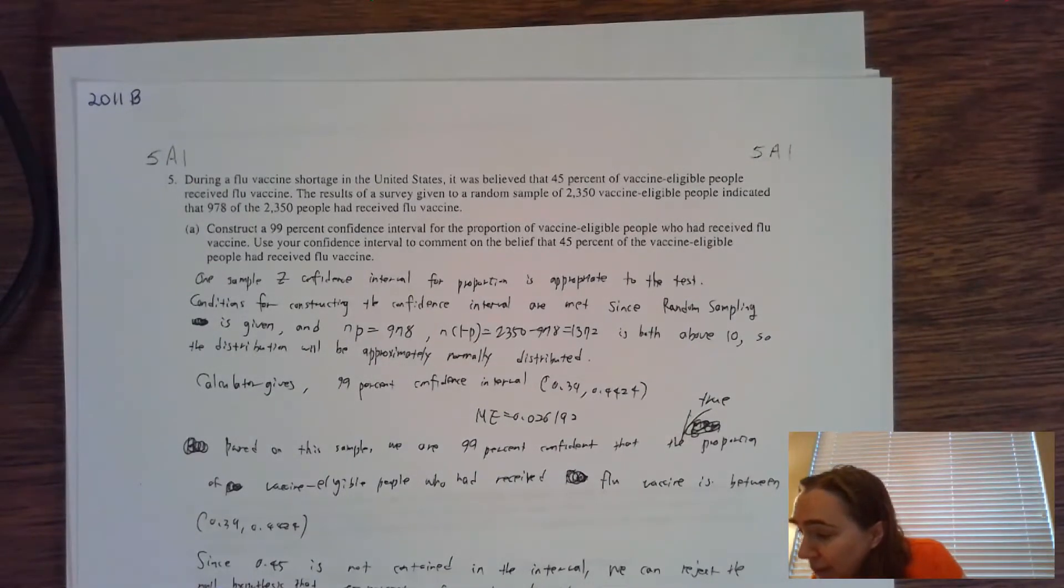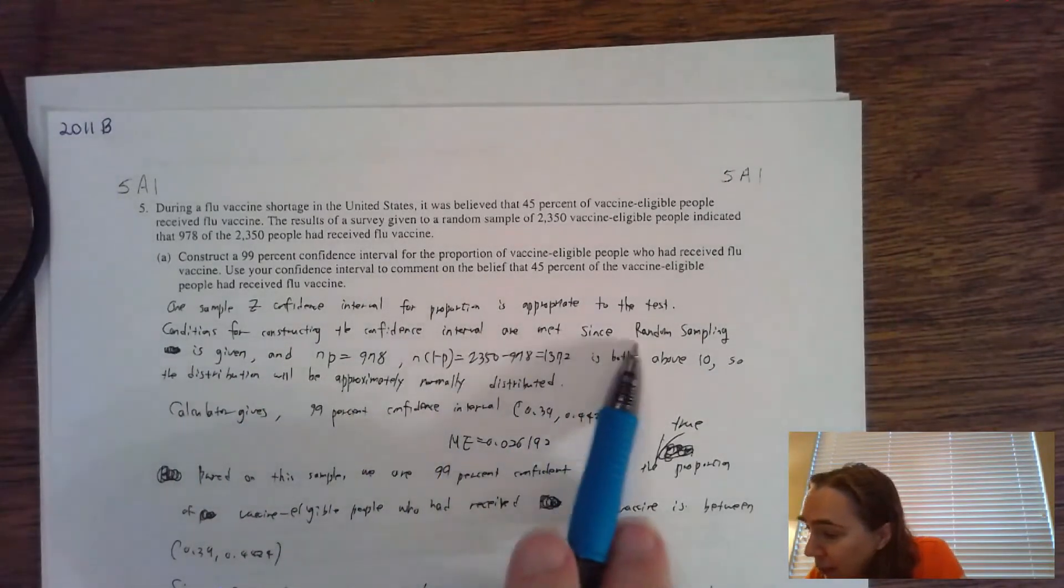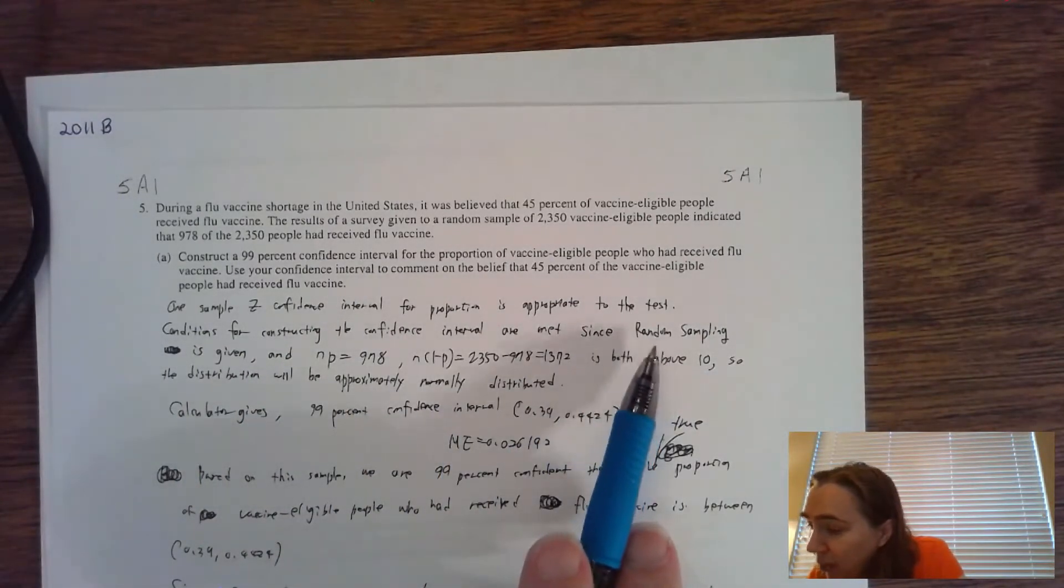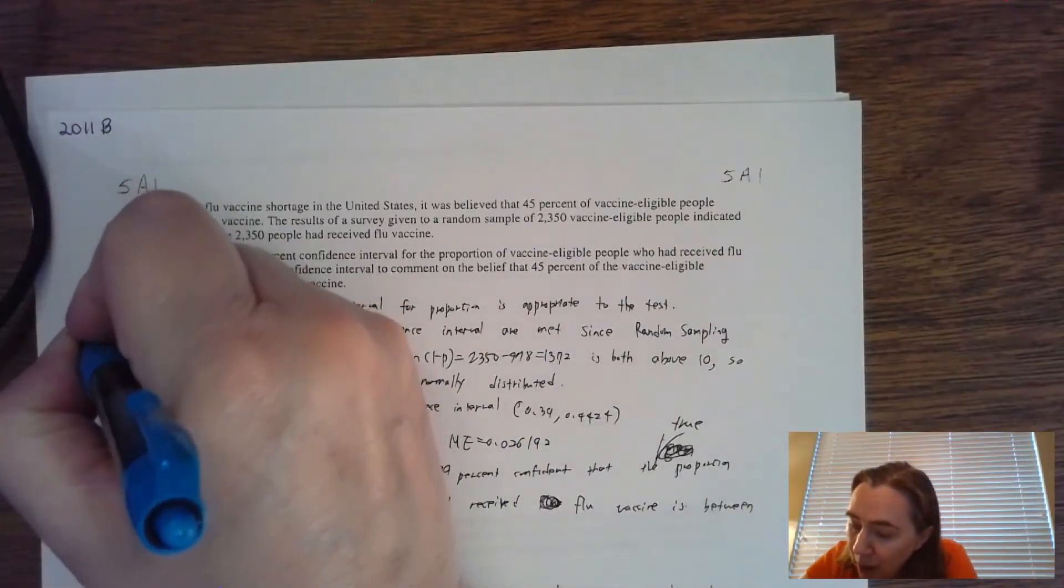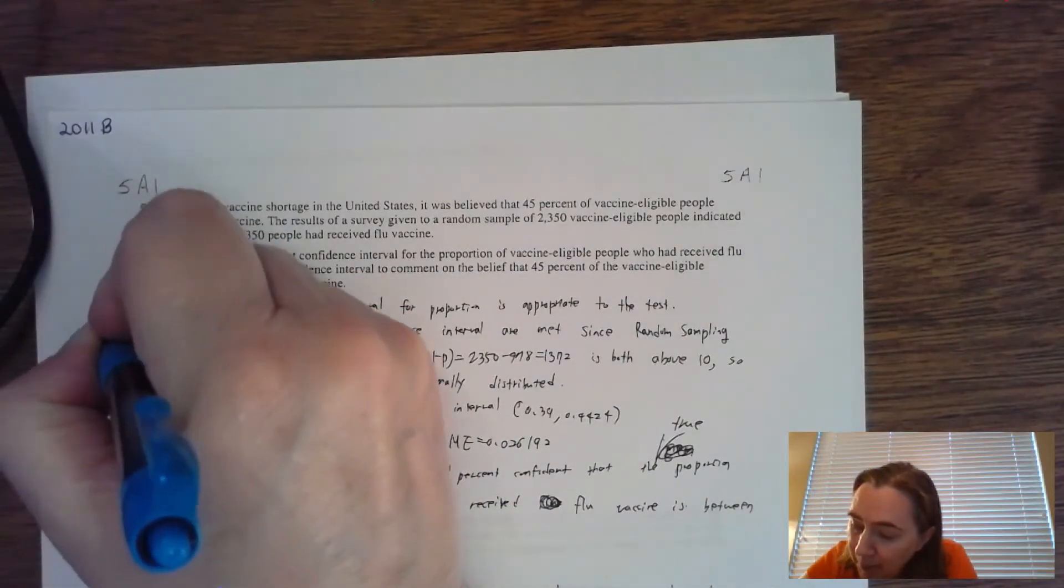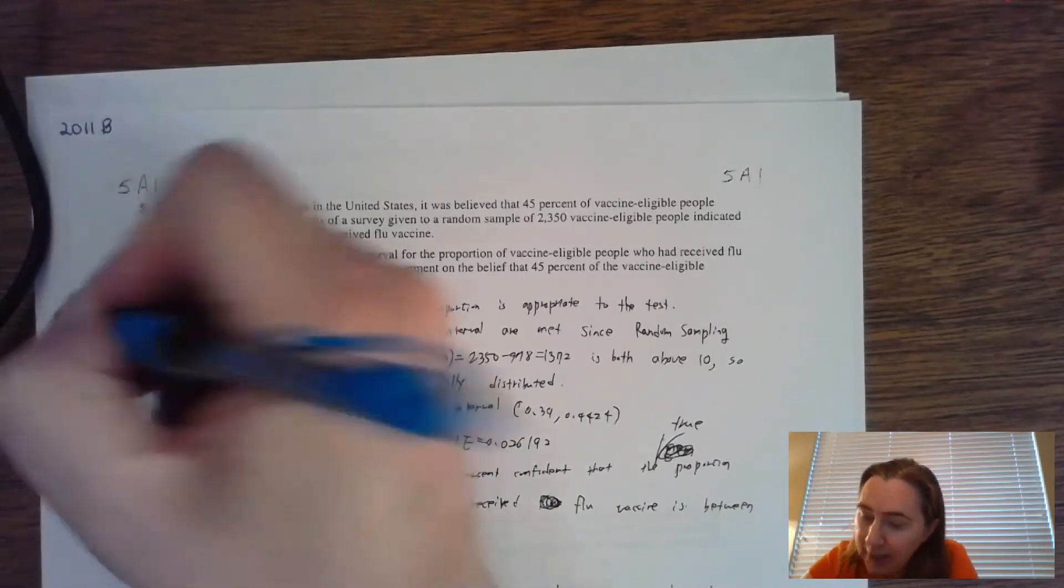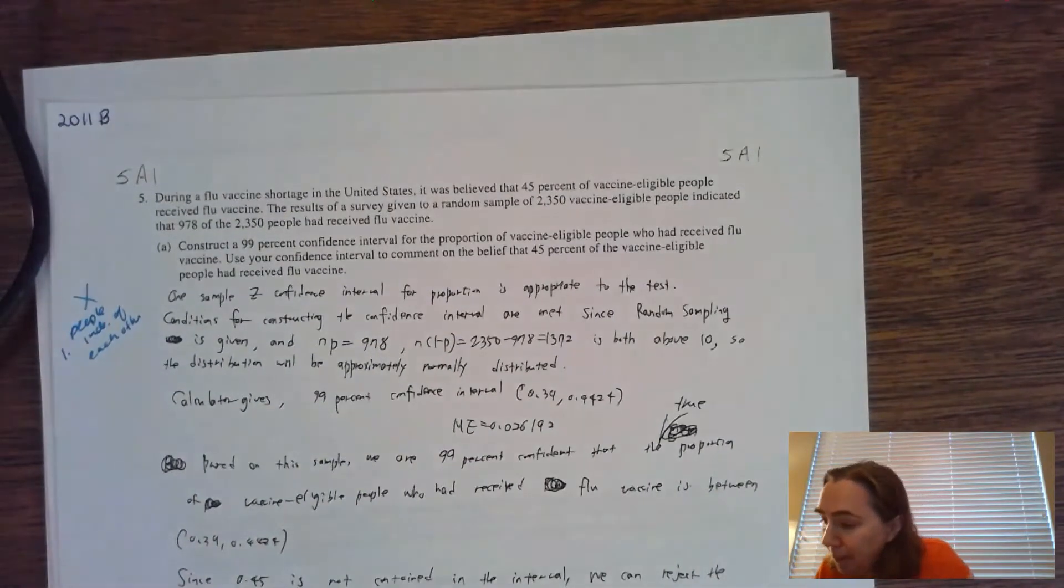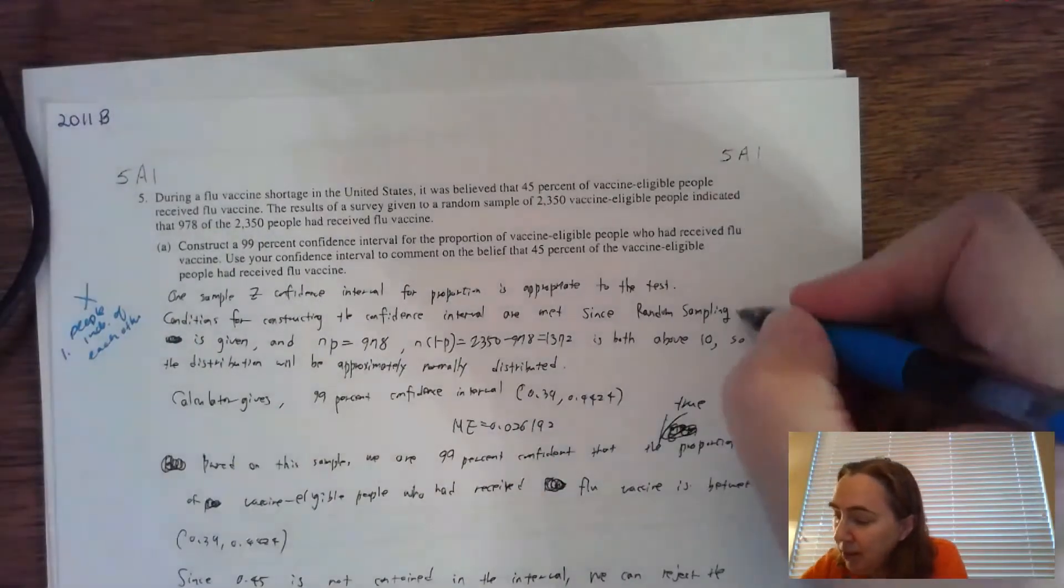First, the people have to be independent of each other. They say that they're met and explain since random sampling. I'm looking for the people to be independent of each other—that would be condition number one. It's missing on my particular paper.